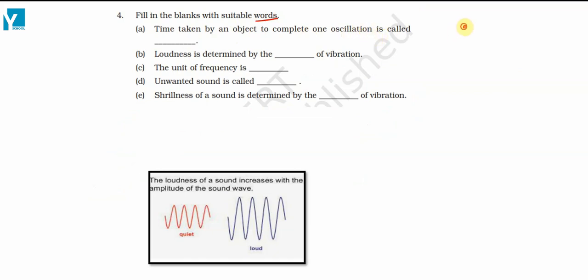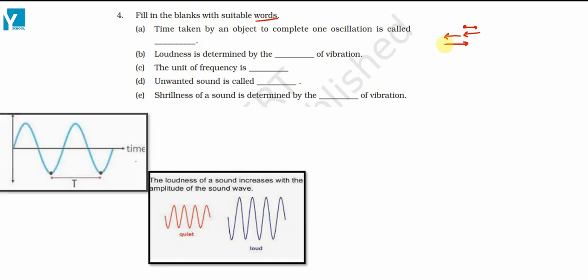If an object is oscillating, suppose it goes here, then it comes to its original position, then it goes there on the left side, then it returns back to its main position. So the time taken for one complete oscillation is called the time period.